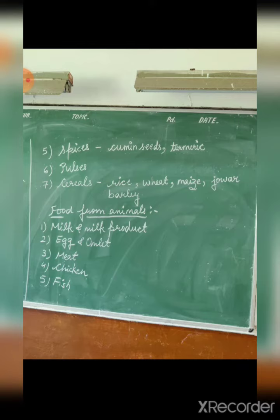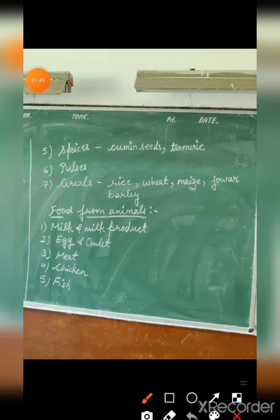Next is pulses — P-U-L-S-E-S, which means dal. Then cereals — C-E-R-E-A-L-S, which means grains. Basically rice, wheat, maize, jowar, barley — all these are cereals. Wheat is grain, maize means corn, and barley.